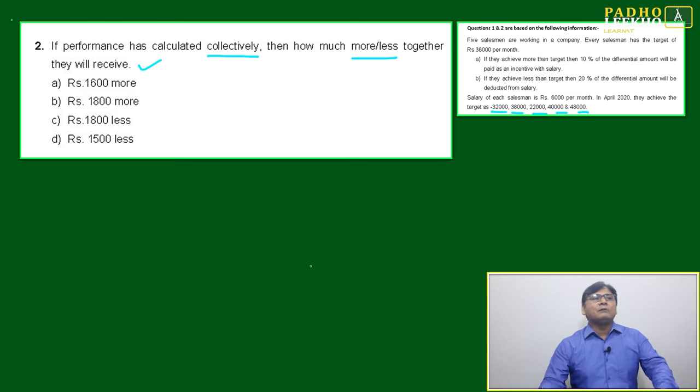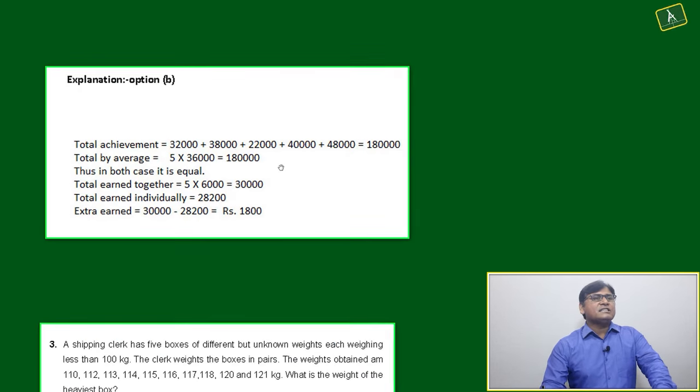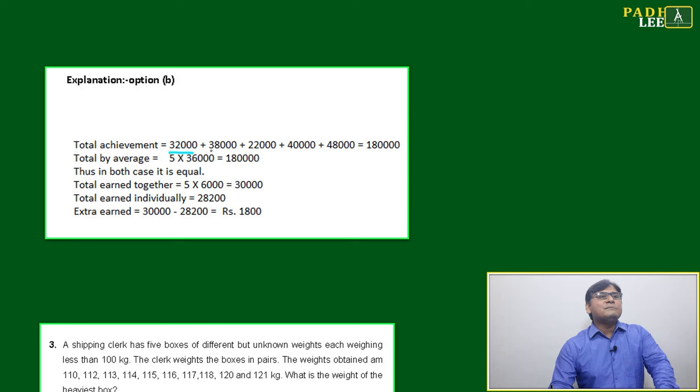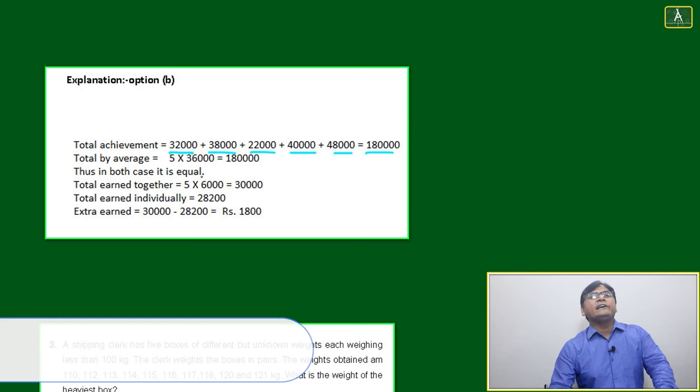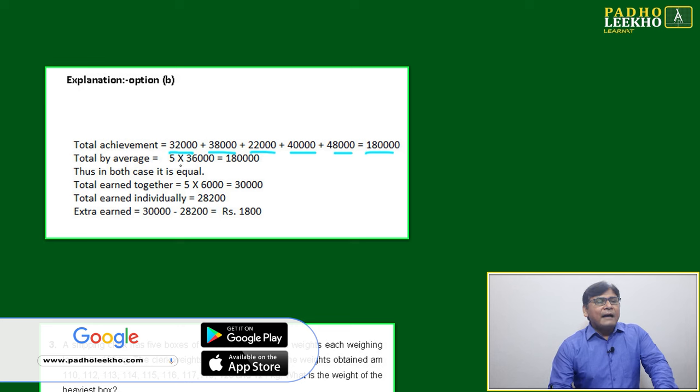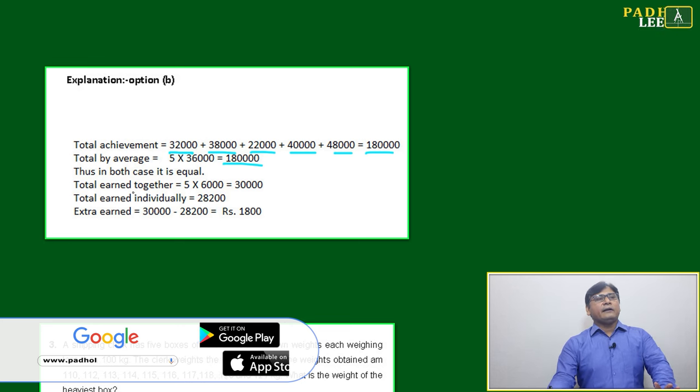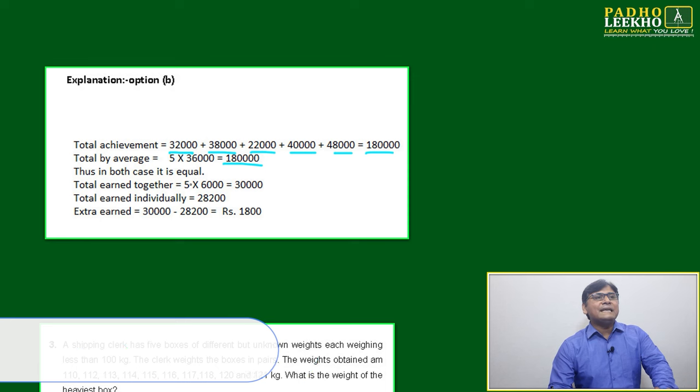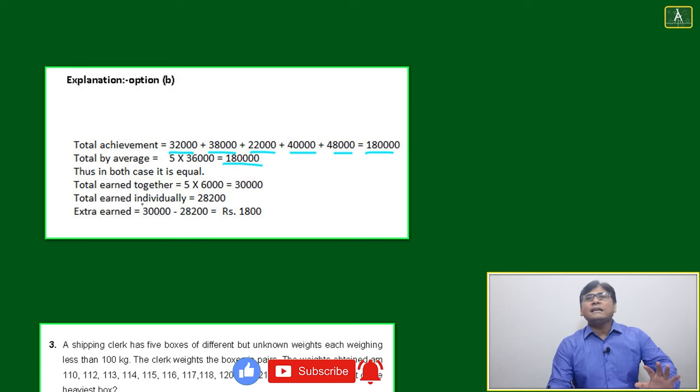take the 10 percent—that will become incentive. The calculation is very simple. Total achievement is 32 + 38 + 22 + 40 + 48 = 1 lakh 80,000. Total by average will become 5 × 36,000, that is also 1 lakh 80,000. Thus, in both cases it is equal.